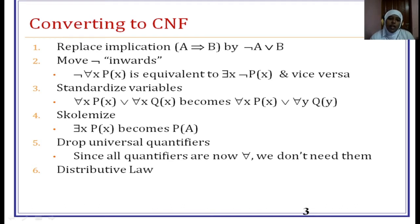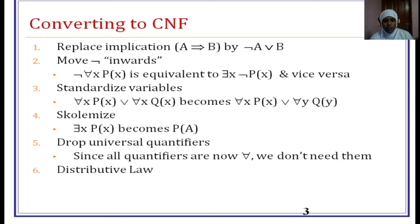Fifth rule: in order to drop the universal quantifier, we can simply drop it because the entire predicate is true for all elements of the domain. We can substitute any values through X, so we simply drop the universal quantifier. Last rule: suppose we have a combination of AND over OR or OR over AND, we can distribute to change all the given predicate sentences so they contain only the OR connective. That is our target.